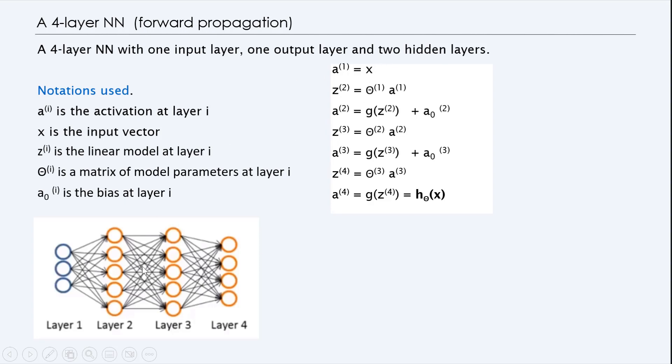And then the z^2, if you know the weights of these things, let's call that theta 1, and then you multiply that by a^1, you get z^2, but then that's a linear function, so you apply a nonlinear transformation to get the actual activation at layer number 2, plus the bias at layer number 2.